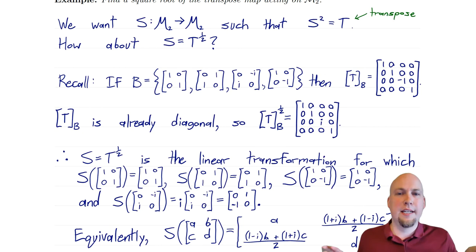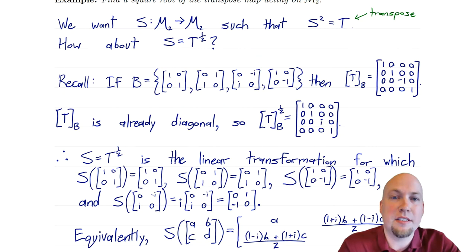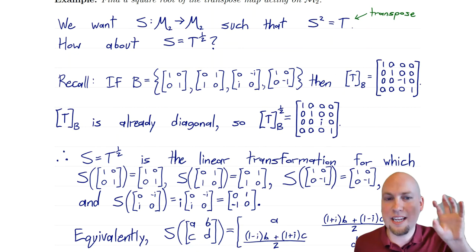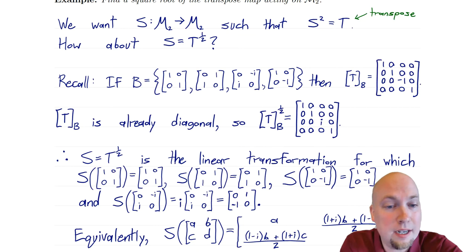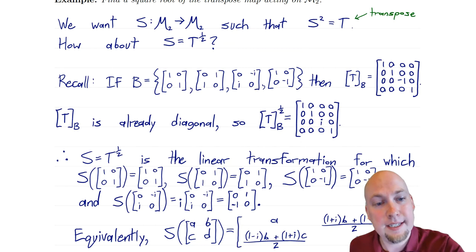So how do we do this? We've got to diagonalize the transpose map — in other words, diagonalize the standard matrix of the transpose map. We've actually already seen a particular basis that the transpose map is diagonal in. Remember, from an earlier lecture, if we work in this poly basis, then the transpose map's standard matrix is already diagonal, which is perfect for taking powers — for diagonal matrices, you just take powers entry-wise. So to take the one-half power of this standard matrix, you take the square root of each of the diagonal entries. Square root of one is one; square root of one is one; square root of minus one — and we're going to have to go to complex numbers here — we get i. Square root of one is also one. So this matrix is the square root of the original matrix.